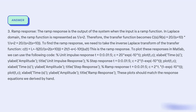To plot these responses in MATLAB, we can use the following code. For the unit impulse response: T = 0:0.1:5; C = 20 * exp(-10*T); plot(C), xlabel('time (s)'), ylabel('amplitude'), title('Unit Impulse Response'). For the step response: C = 2*(1 - exp(-10*T)); plot(C), xlabel('time (s)'), ylabel('amplitude'), title('Step Response'). For the ramp response: C = 2*T .* (1 - exp(-10*T)); plot(C), xlabel('time (s)'), ylabel('amplitude'), title('Ramp Response'). These plots should match the response equations derived by hand.